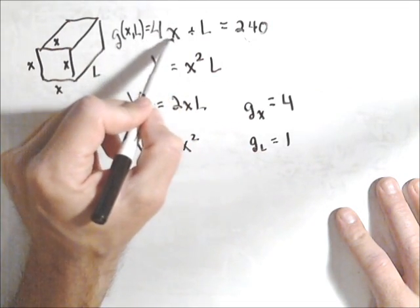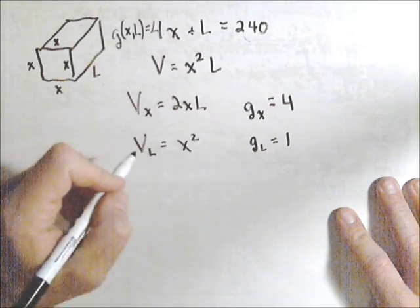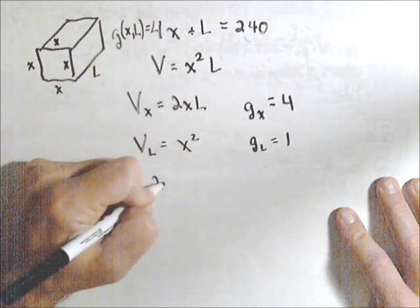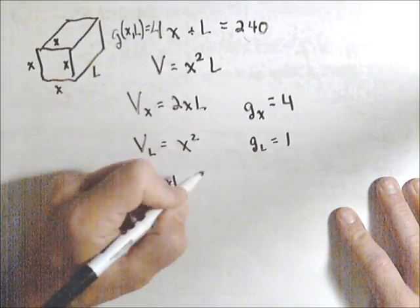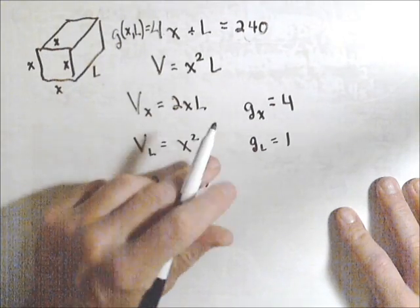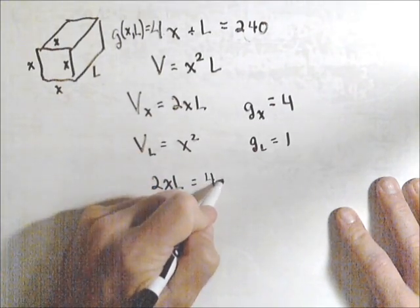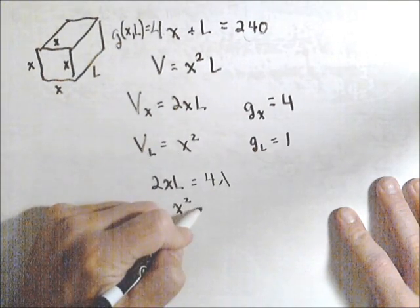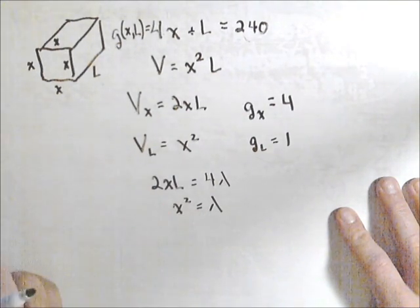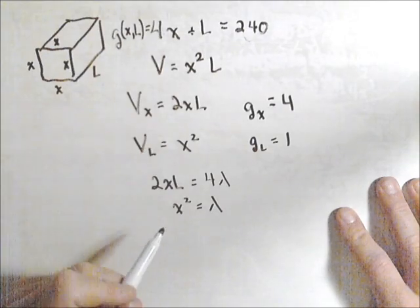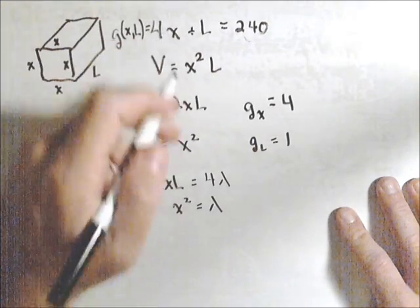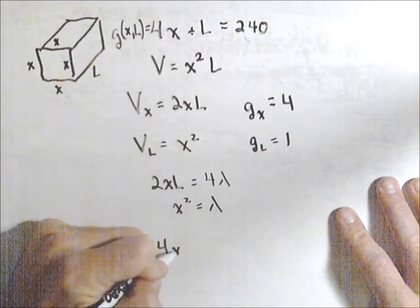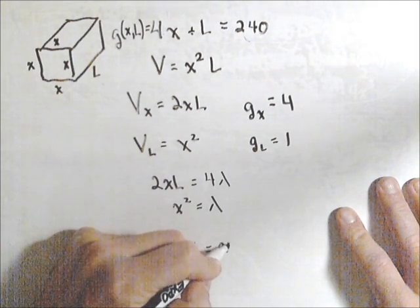So taking the partials with respect to x and with respect to L. So our system, we're going to have 2xL equals lambda times 4, let's write it as 4 lambda. And we have x squared equals 1 times lambda, or lambda. So we actually already have lambda in this one, which makes it a little bit easier for us. And our final constraint is that we know that 4x plus L must equal 240.